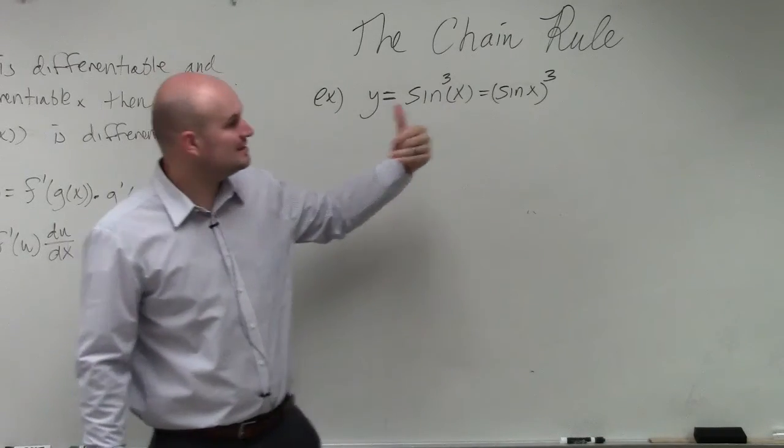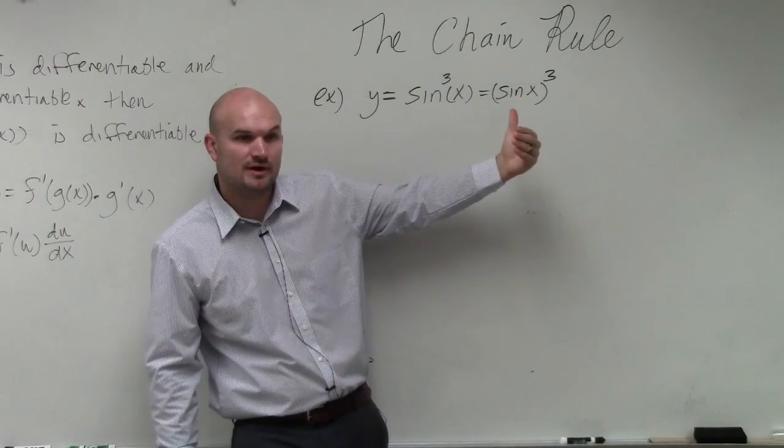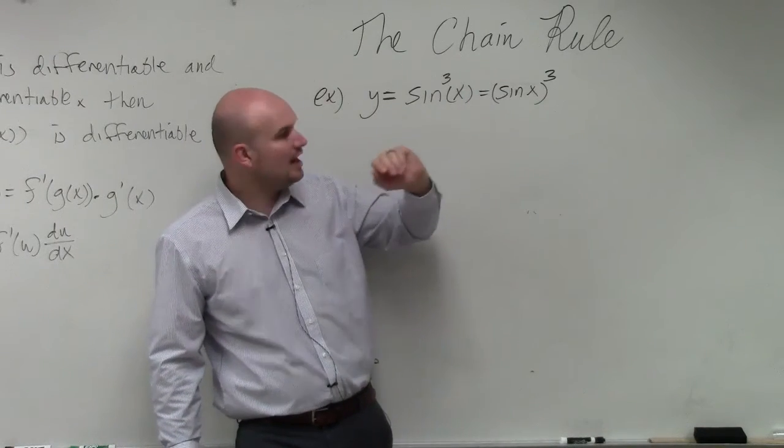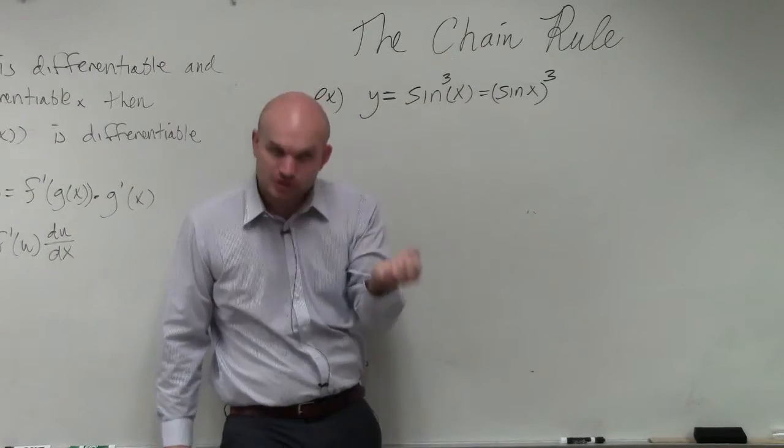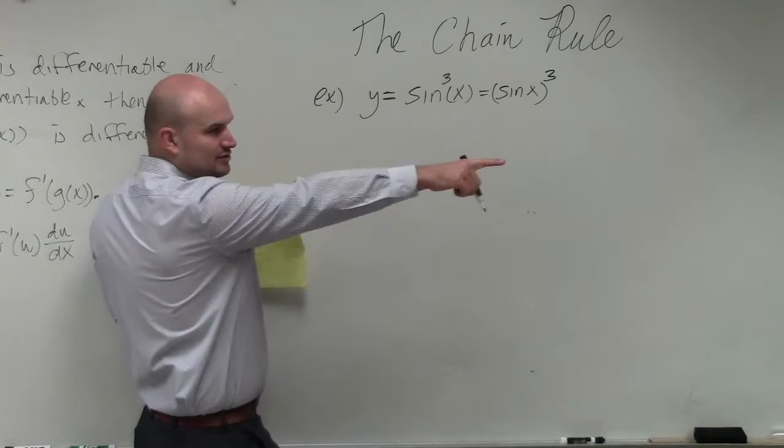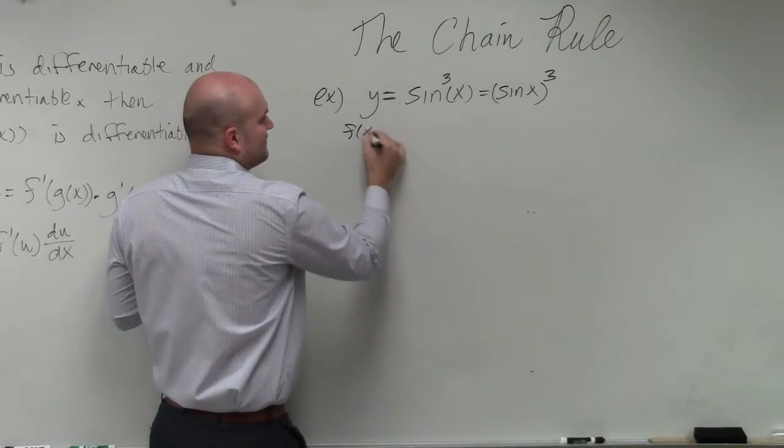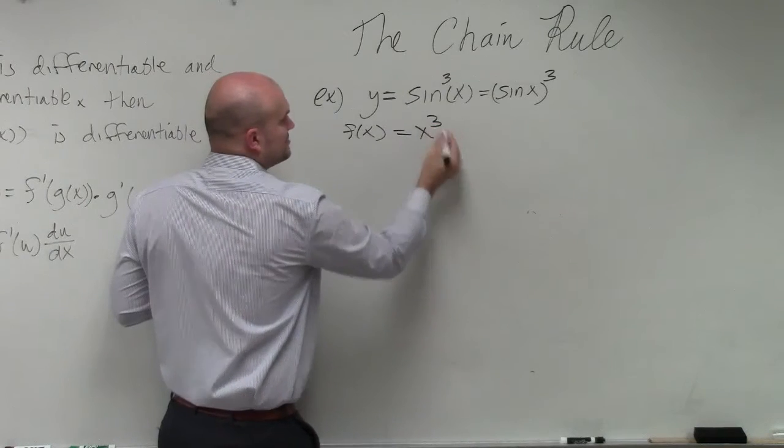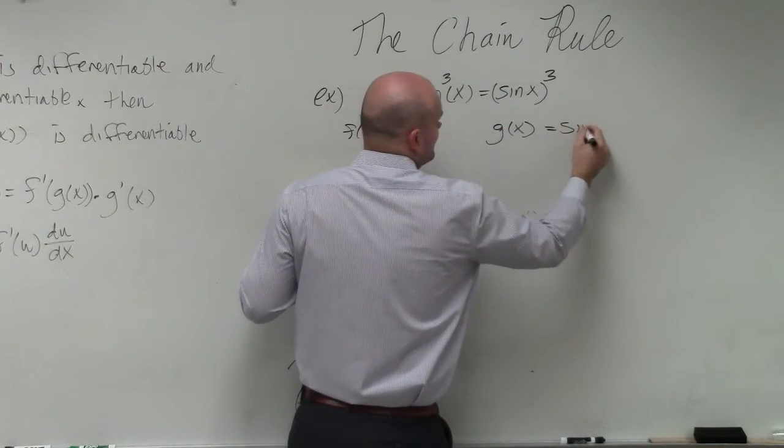Now the next thing is I realize that I have an inside function and an outside function. So the outside function I'm going to call f of x, and the inside function I'm going to call g of x, because you can see our chain rule is f of g of x. So my outside function, f of x, is going to be x cubed. My inside function, g of x, equals sine of x.